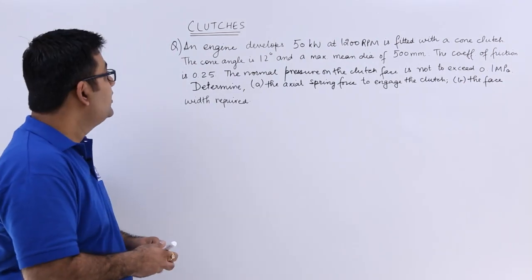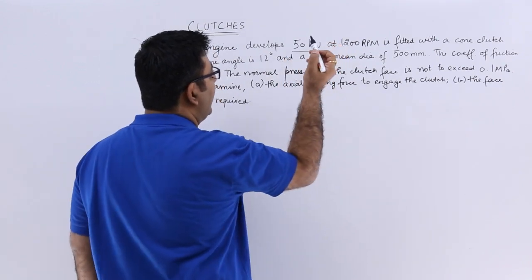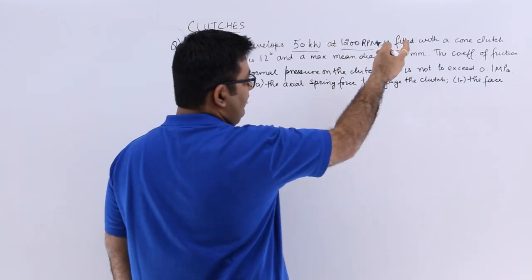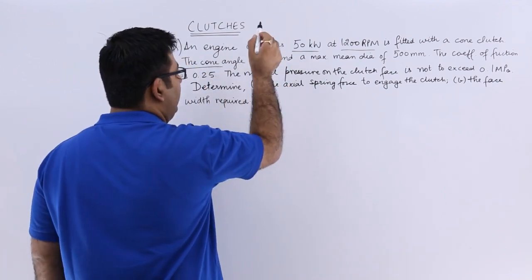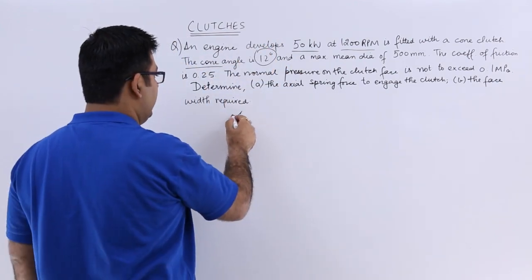It says an engine develops 50 kilowatts at 1200 RPM. It is fitted with a cone clutch. The cone angle is 12 degrees. That's the half of it, so alpha is 12 degrees.